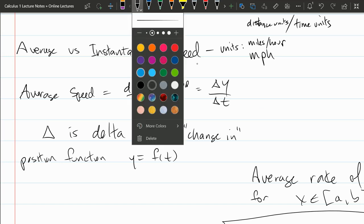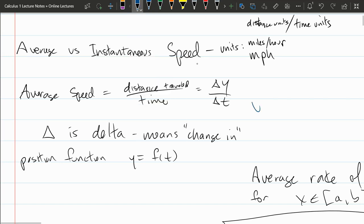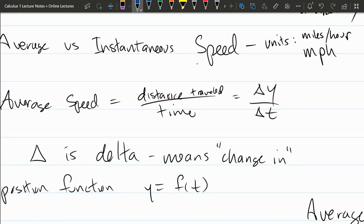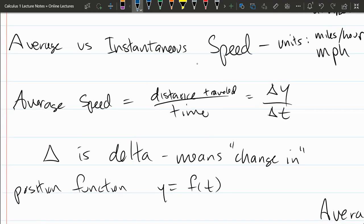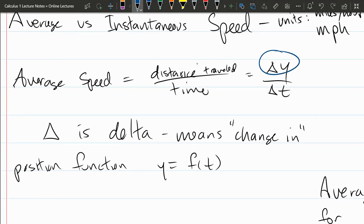Now we are going to look a bit more closely at this average speed right here. It's again distance travel divided by time. Delta is a Greek letter. Delta means change in, and so we have delta y over delta t, change in distance divided by change in time.